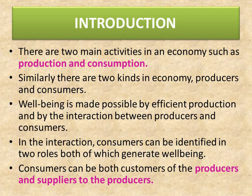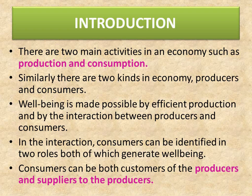In an economy, two things must exist: there must be production, and there should be consumption of the products. Similarly, there are two kinds in an economy: producers and consumers. Producers make goods or provide services to earn money, and they set the price for goods or services based on supply and demand. A consumer is an individual who pays money to consume goods and services. Without consumer demand, producers would lack one of the key motivations to produce — that is, to sell to customers.